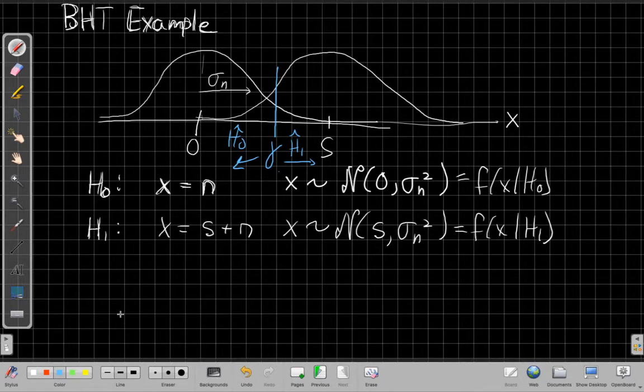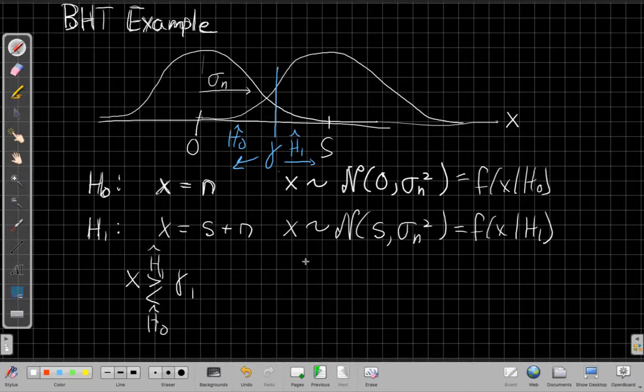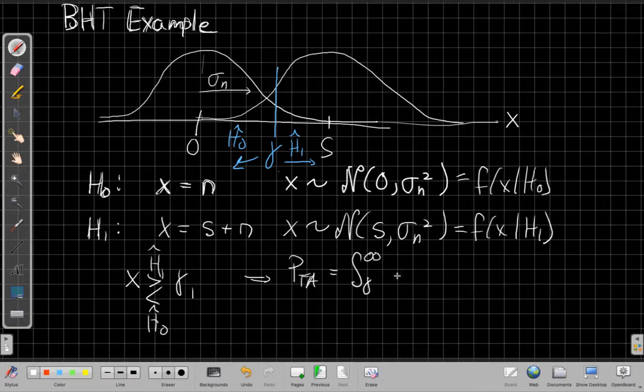Well, that comes down to those probabilities we talked about in the previous video of what makes one better than the other. If I pick some gamma like this, my decision rule is when x is above gamma, I'm going to estimate H1. If it's below gamma, I'm going to estimate H0. Then what this tells me, for example, is that my false alarm, that integral over the decision region becomes just an integral from gamma above.